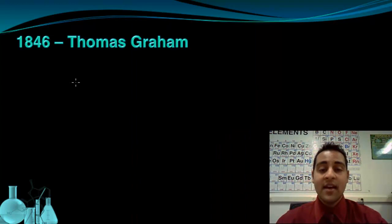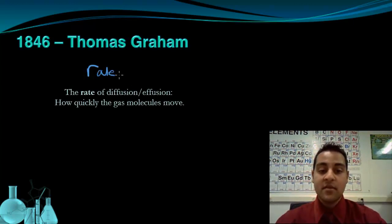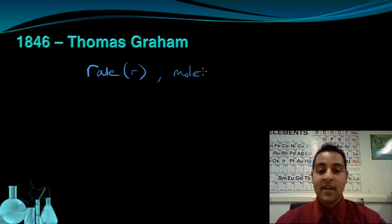And in 1846, a guy named Thomas Graham investigated diffusion and effusion of gases through various containers. And he came up with a relationship between the rate, R, of a gas diffusing or effusing, and the molecular mass of that gas.